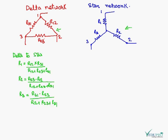Delta network can be converted into star network by using these three formulas. The resistances in delta network can be converted into the star network resistances by using these calculations.